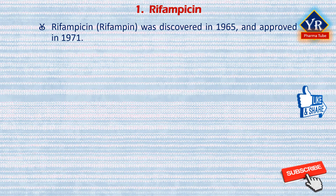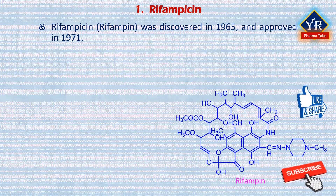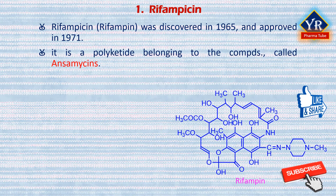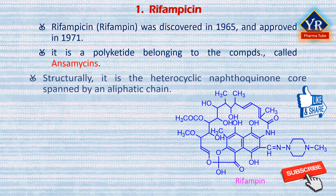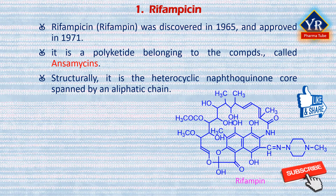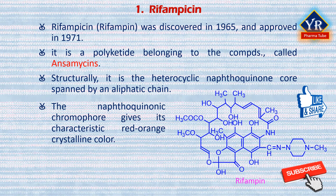The first drug of this lesson is rifampicin. Rifampicin was discovered in 1965, marketed in 1968, and approved in 1971. Rifampicin is also known as rifampin. It is a polyketide belonging to the chemical class of compounds termed ansamicins. Ansamicins are unique in their structures, which comprise an aromatic moiety bridged by an aliphatic chain. In the structure of rifampicin, the heterocyclic naphthoquinone core is spanned by an aliphatic chain. The naphthoquinonic chromophore gives rifampicin its characteristic red-orange crystalline color.